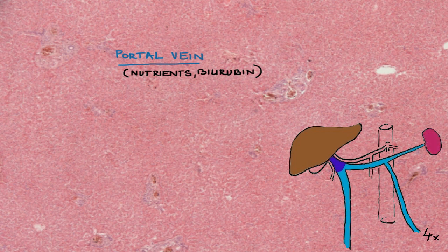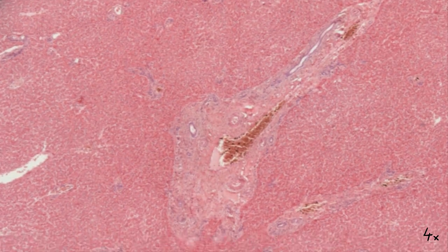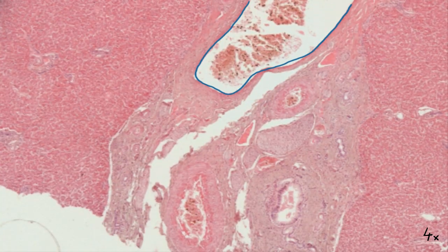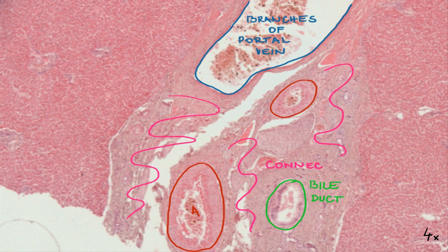The main portion of oxygen comes from the hepatic artery, which branches from the celiac trunk, which is a branch of the aorta. Another structure we can find in the porta hepatis is the hepatic duct, which moves bile into the gallbladder. In the section, there are branches of the portal vein and hepatic artery entering the liver, and bile ducts exiting the liver, which are embedded in connective tissue.